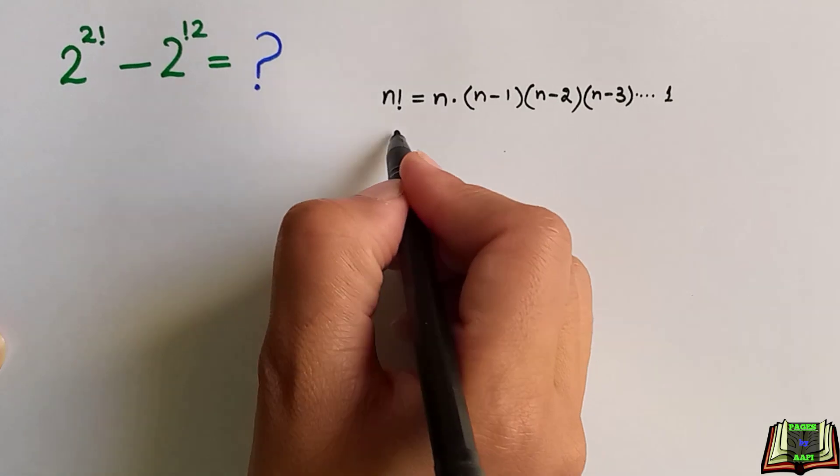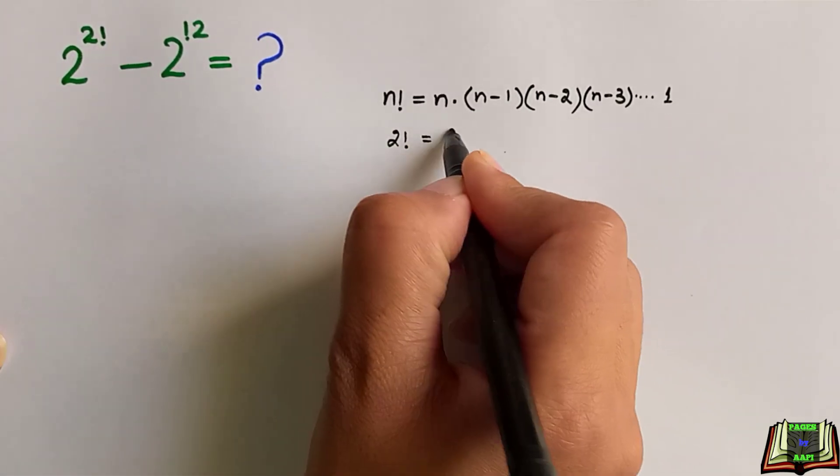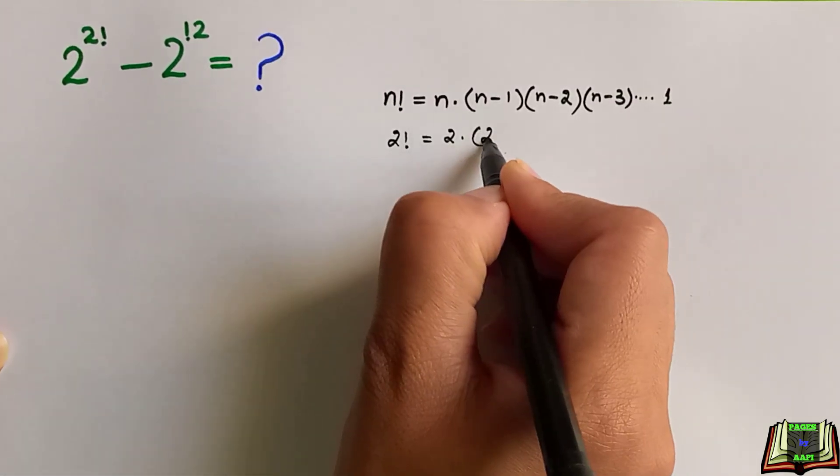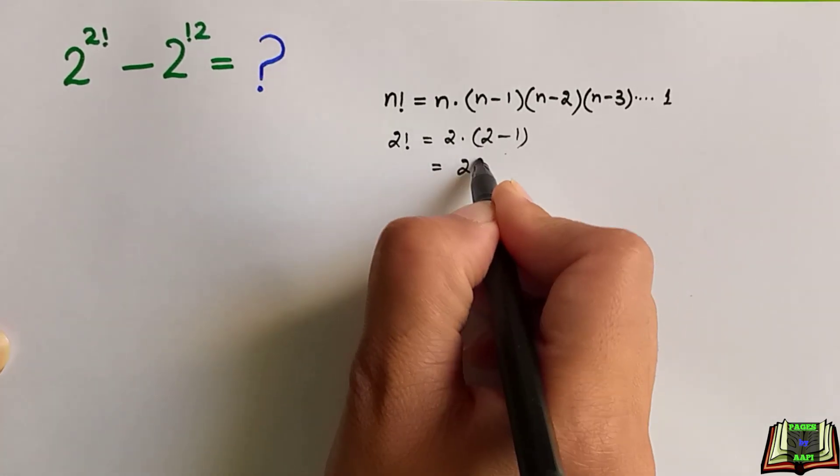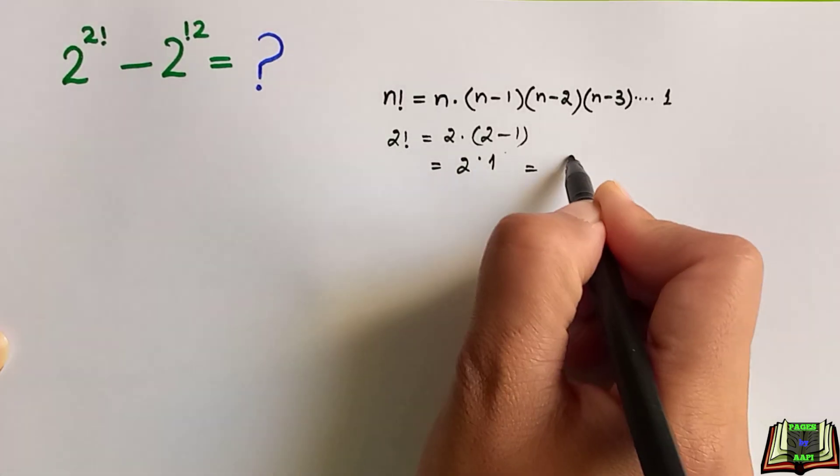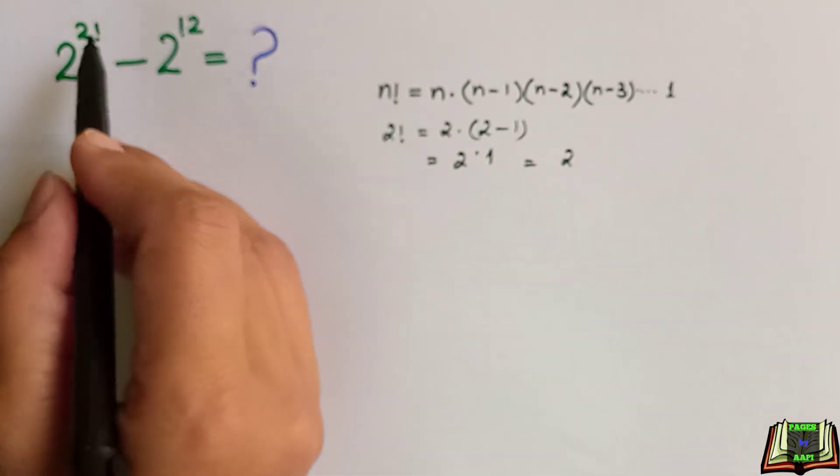In this case, n is 2. So 2 factorial equals 2 times (2-1), which is 2 times 1, equals 2. We got the value of 2 factorial.